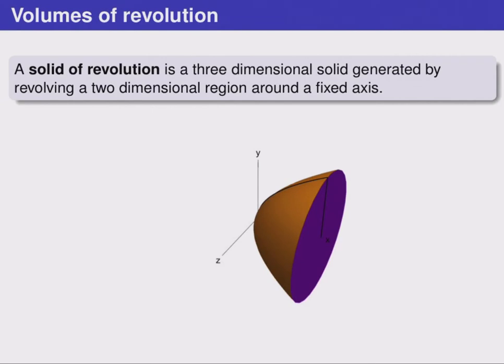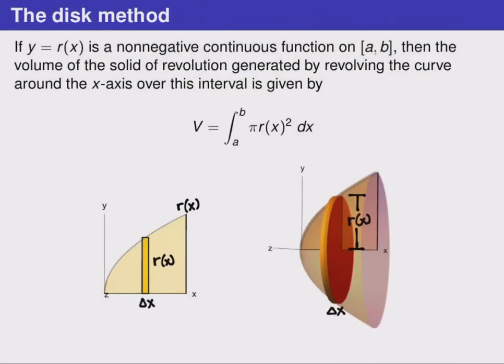Here's a solid view of the same shape. Here we have the region and the box, and the resulting cylinder inside the three-dimensional shape.